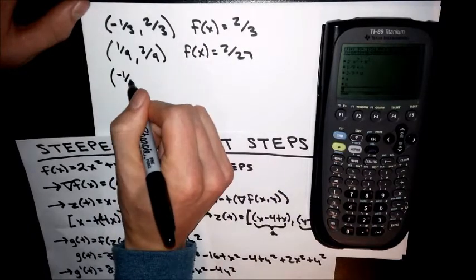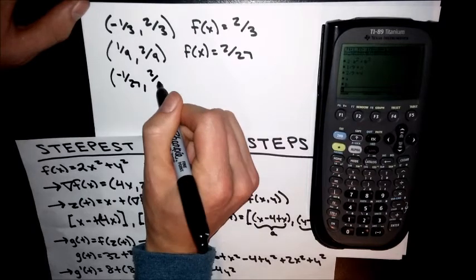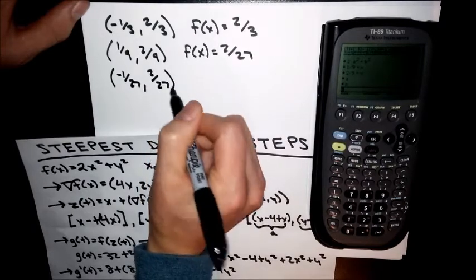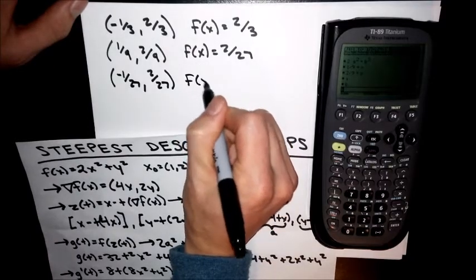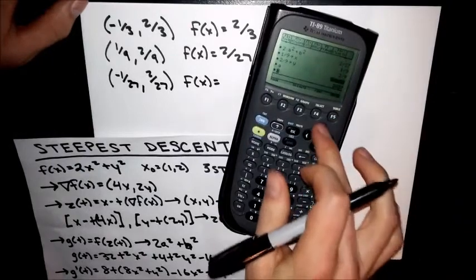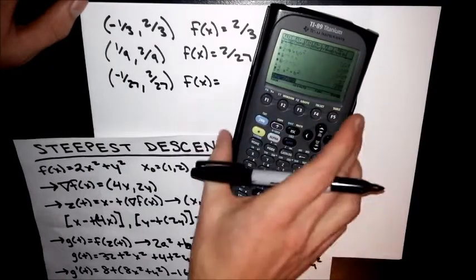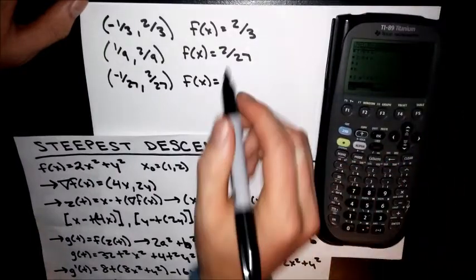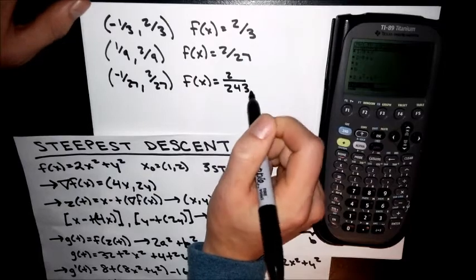Negative 1 over 27, 2 over 27. 2A squared plus B squared is 2 over 243.